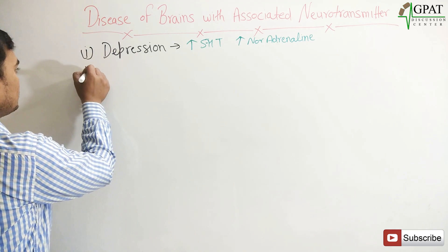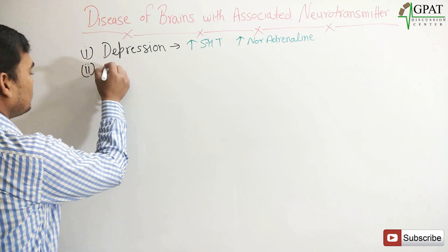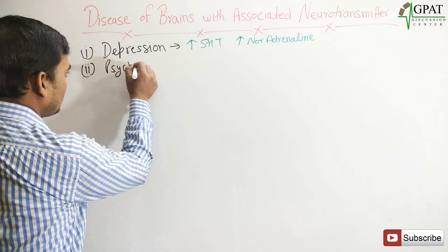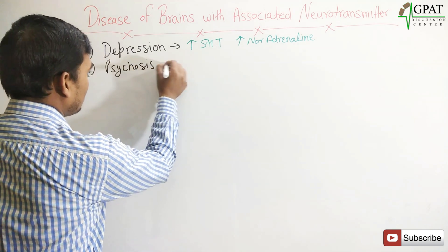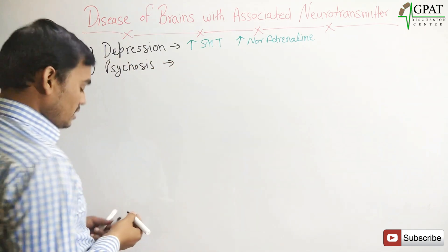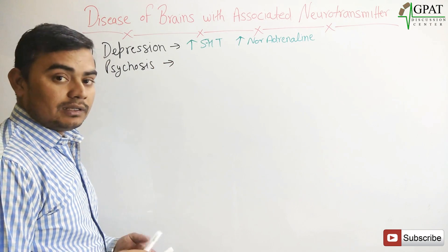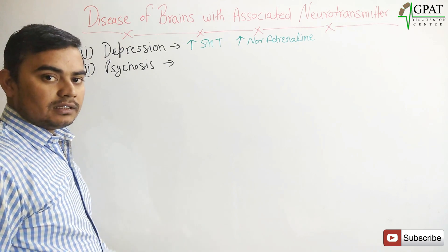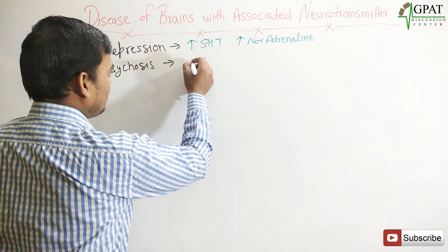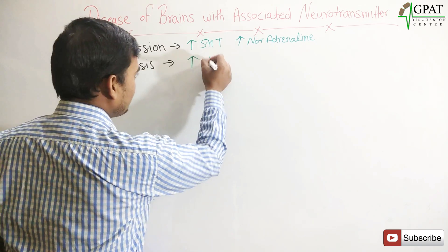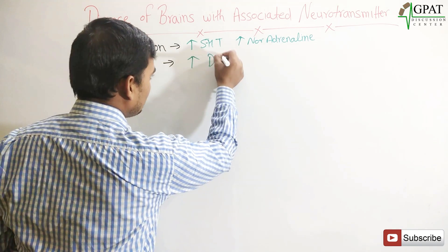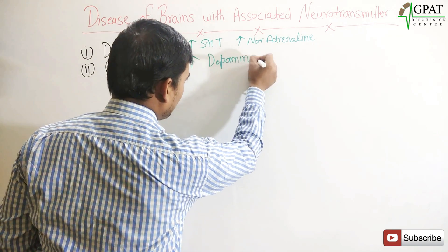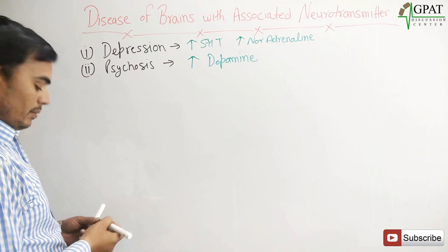Next is psychosis. In psychosis, your dopamine level increases, mainly in the substantia nigra. So here we have increased dopamine level.